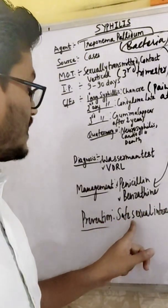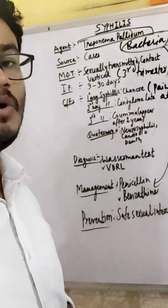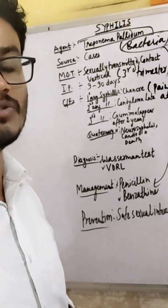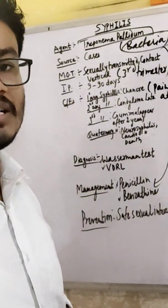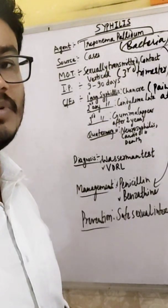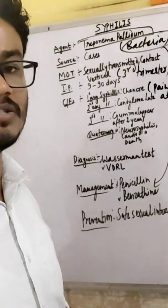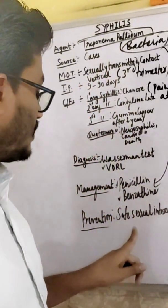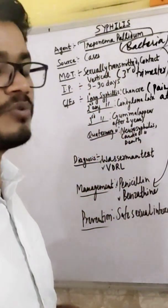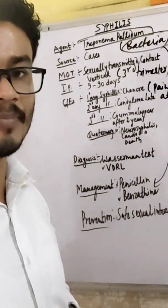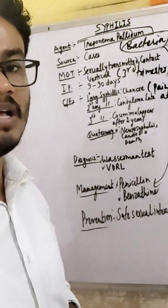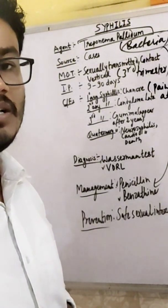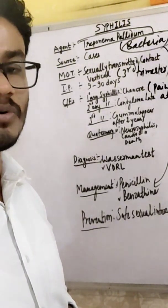Prevention involves safe sexual practices. Those who do not practice safe sexual intercourse will have higher chances of getting syphilis. Safe sexual intercourse and the use of contraceptives should be adopted.